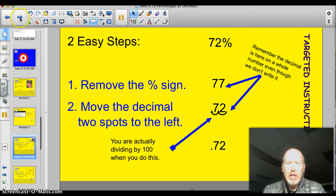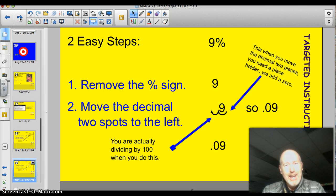Alright, let's take a look at another example. 9%, a little quirky. Step number one, remove the percent sign. We just got plain old 9. Now, move the decimal two spots to the left. This is where it gets a little tricky. So, we need to put a placeholder in there, so we add the zero. So, actually, you get .09.